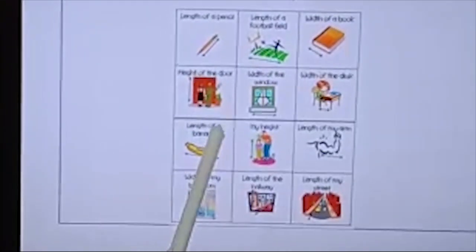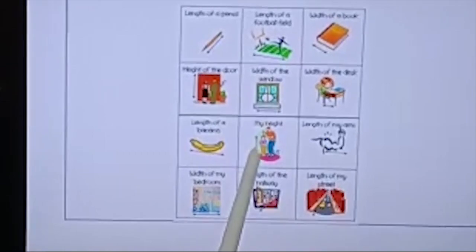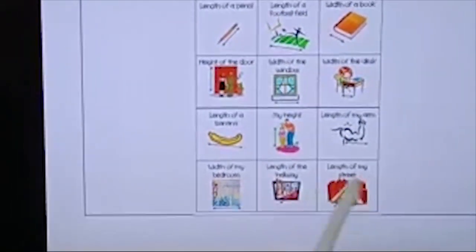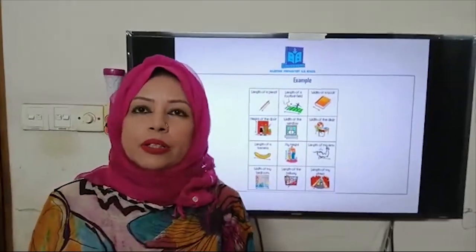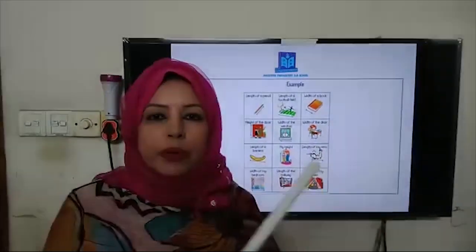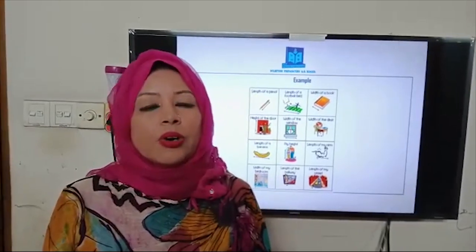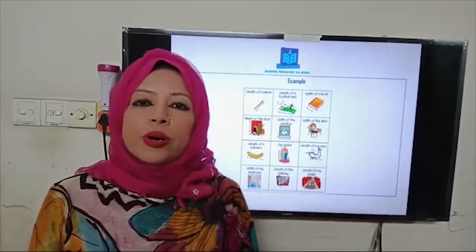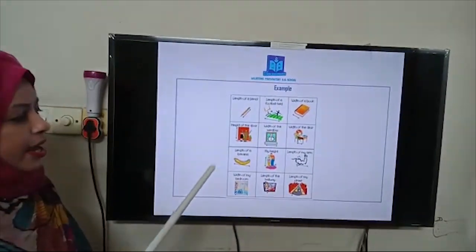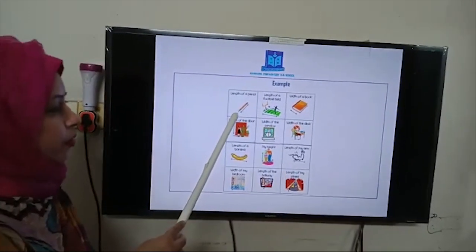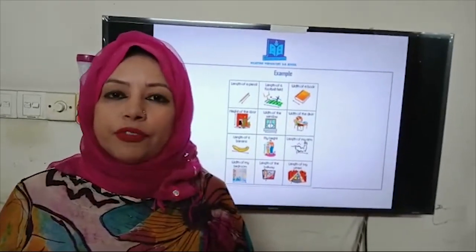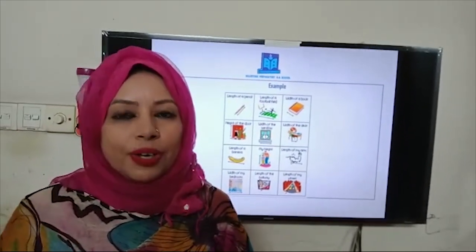So many examples: length of a banana, your height, length of your arm, width of a bedroom, length of a highway, and length of a street. Length measurement also tells you about distance — if you want to go from one place to another, sometimes we have to know the distance of the road. That time also we have to use length measurement. So whenever we have to find the length of a pencil, a football field, or the width of a book, we use length measurement.